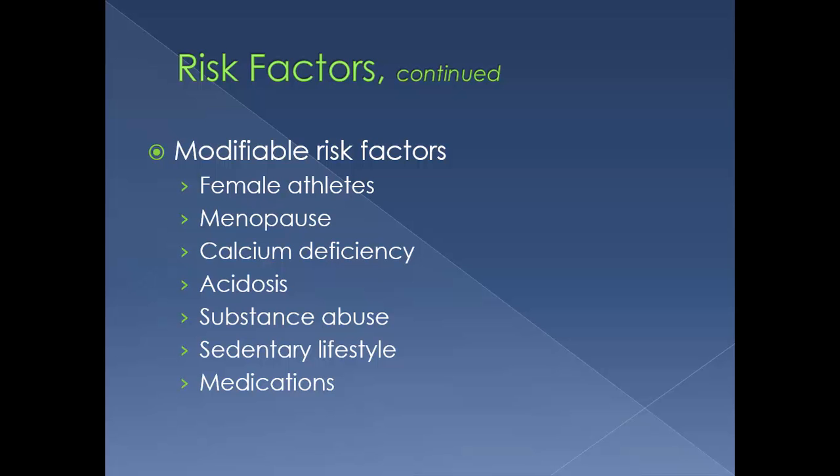Substance abuse — this includes cigarette smoking and excessive alcohol intake. Smoking decreases blood supply to the bone; nicotine slows the production of osteoblasts and impairs calcium absorption. Alcohol has a direct effect on osteoblast activity, suppressing bone formation. A sedentary lifestyle is also a risk — patients need weight-bearing exercises to increase blood flow to the bones and increase osteoblast activity and growth.